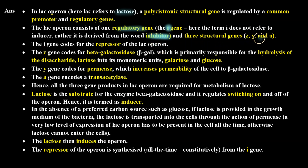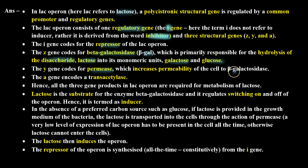The lac operon has three structural genes: Z, Y, and A. The i gene codes for the repressor of the lac operon. The Z gene codes for beta-galactosidase (beta-gal), which is primarily responsible for the hydrolysis of the disaccharide lactose into its monomeric units — galactose and glucose. The Y gene codes for permease, which increases permeability of the cell to beta-galactosidase. The A gene encodes transacetylase. Hence all three gene products are required for metabolism of lactose.